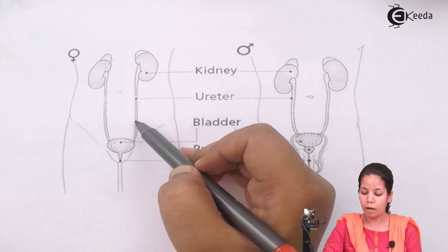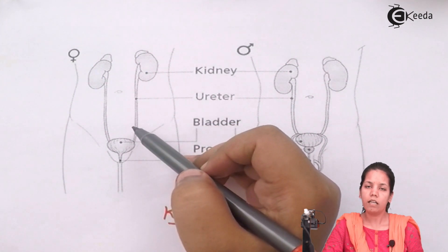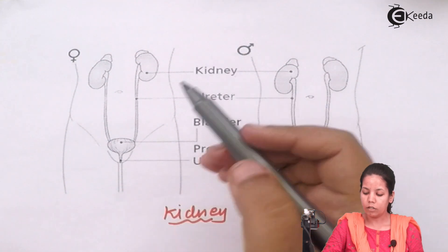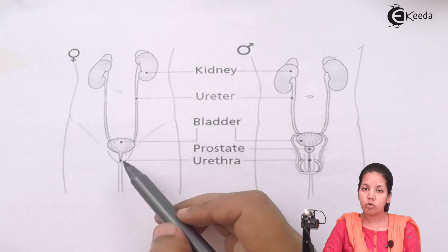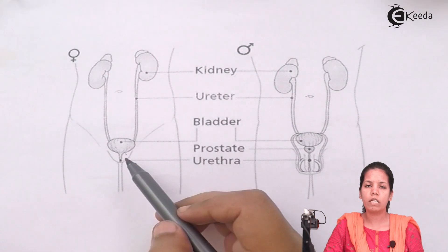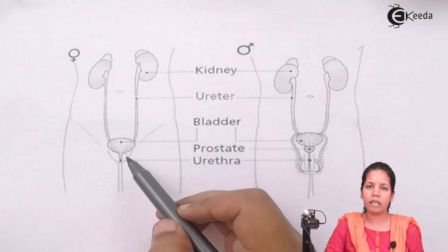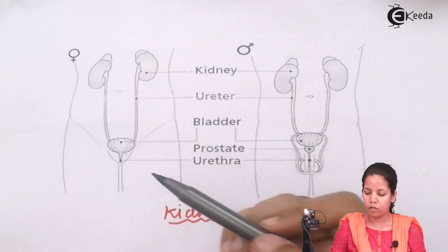There are a pair of ureters that come out from the kidney, carrying the basic secretions of the kidney. The urinary bladder stores the urine — the excretory product removed by the kidney — which contains all the unwanted substances from the body.